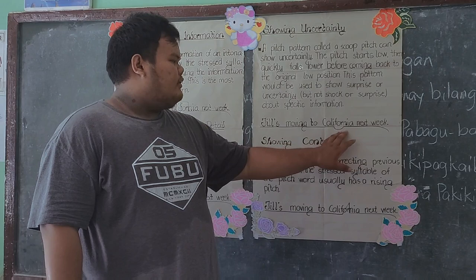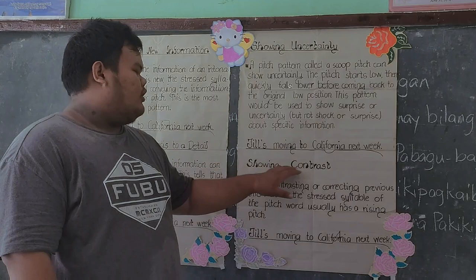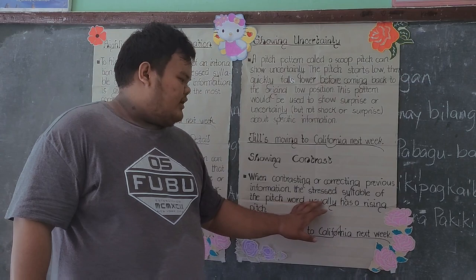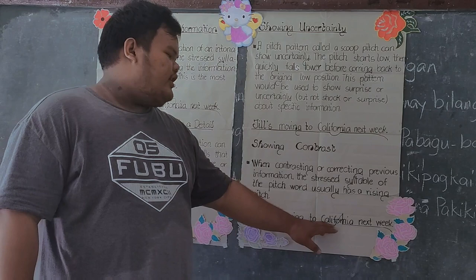The fourth classification of pitch words is showing contrast. When contrasting or correcting previous information, the pitch word usually has a rising pitch. For example, in 'Jill's moving to California next week,' 'California' has a rising and falling stress that refers to new or contrasting information.